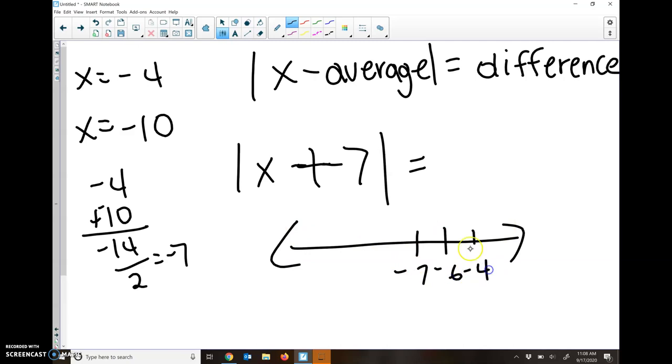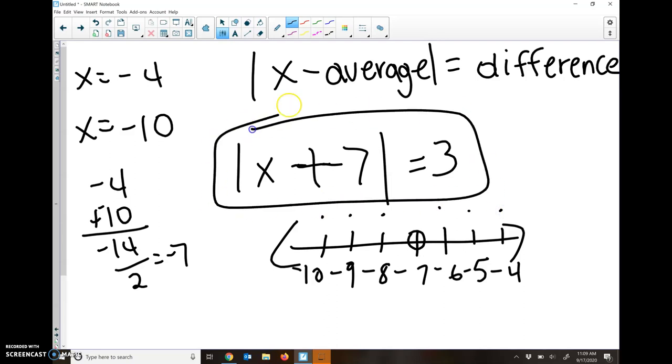How many spots? I can't count. Negative 6, negative 5, negative 4. How many spots away am I from negative 4 and negative 10? So here I am at negative 7. I am 1, 2, 3 spots away from negative 4. So then my answer is the absolute value of x plus 7 equals 3.